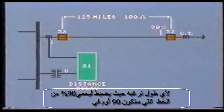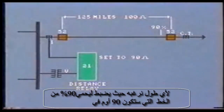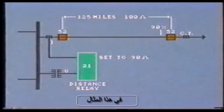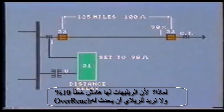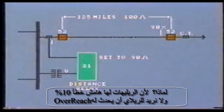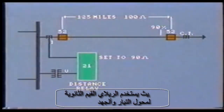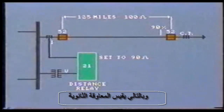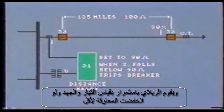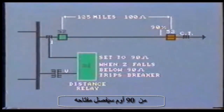Typically, it will be set to protect up to 90% of the length of the line — that is, for an impedance of 90 ohms in this example. Relays have a 10% error margin, and we don't want the relay to overreach. The relay is using secondary values from the CTs and VTs, so it really measures secondary impedance. The relay continuously compares voltage and current, and if the primary impedance falls below 90 ohms, it will trip its associated breaker.